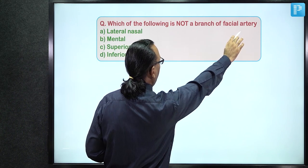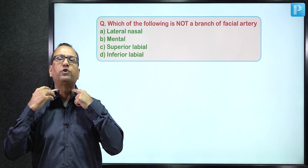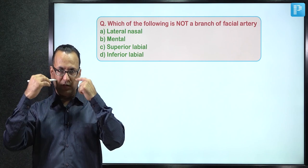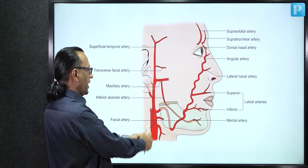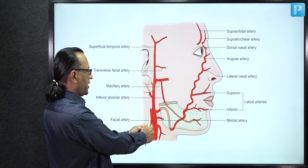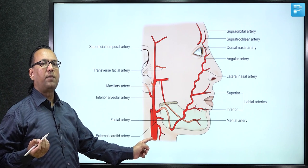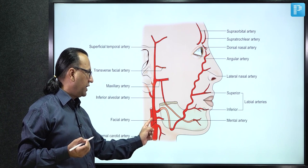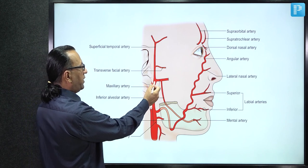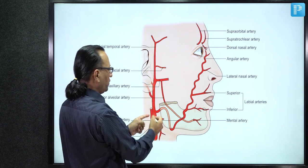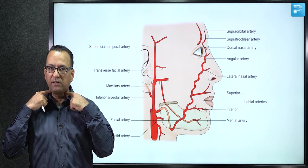This question asks which of the following is not a branch of the facial artery. The facial artery is a branch of the external carotid artery with a cervical portion in the neck and a facial portion on the face. In the carotid triangle, the common carotid artery bifurcates into the external and internal carotid arteries.